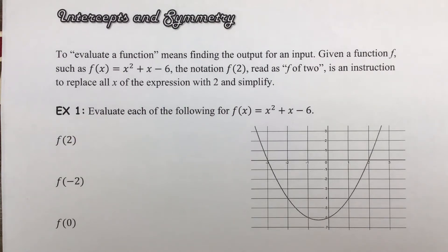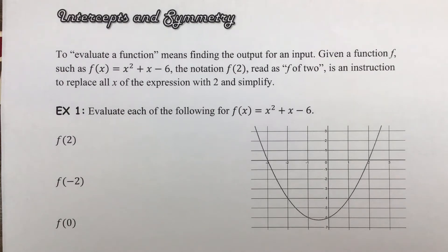To evaluate a function means finding out the output for an input. Given a function f, such as x squared plus x minus 6, the notation f(2) is read as 'f of 2' and it's an instruction to replace the x of the expression with 2's and then to simplify, or just evaluate what it turns out to be.